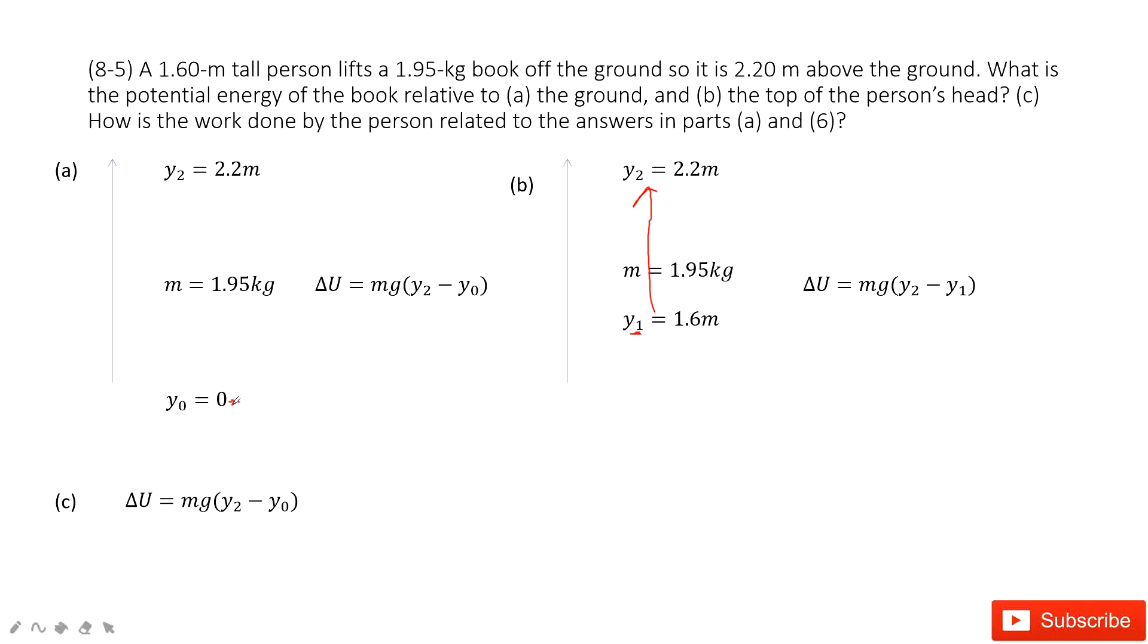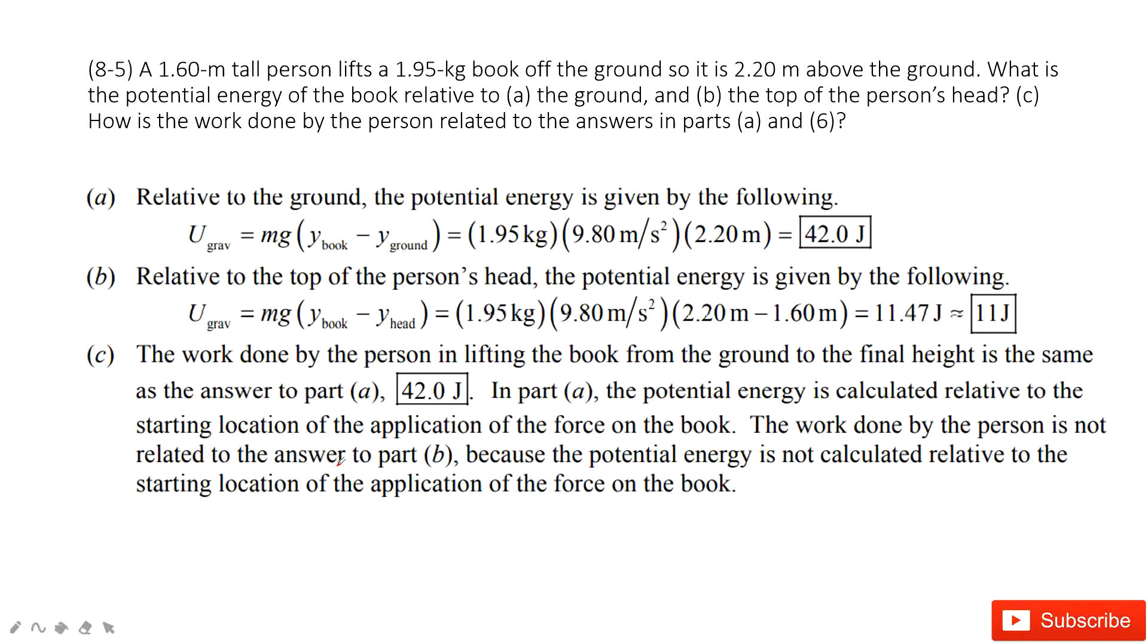The change in potential energy in both cases is equal, because initially the potential energy is zero when it's on the ground. Finally, the potential energy is 2.2 meters above the ground, so y2 minus y0 times mg is the change in potential energy. This equals the work done by the person. After we input all the known quantities, we get the final answer. Thank you.